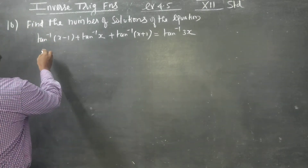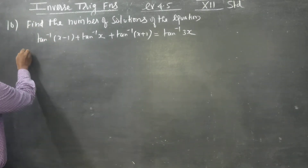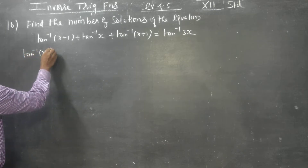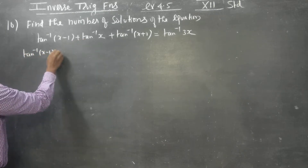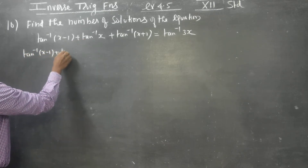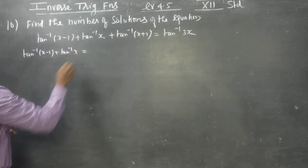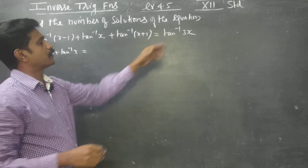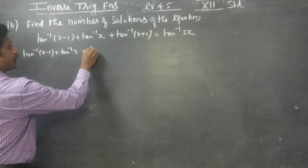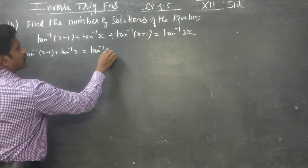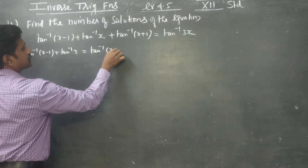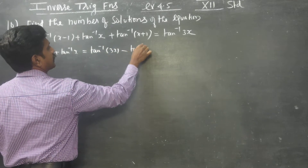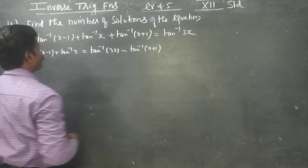First of all, I am going to start with the first two terms: tan inverse of (x minus 1) plus tan inverse of x is equal to tan inverse of 3x minus tan inverse of (x plus 1).